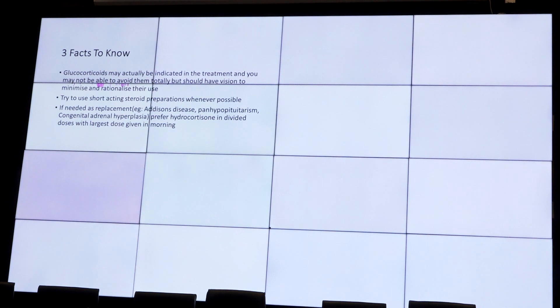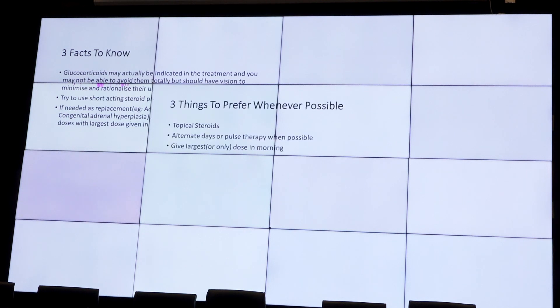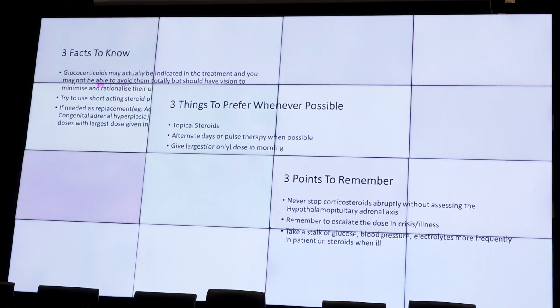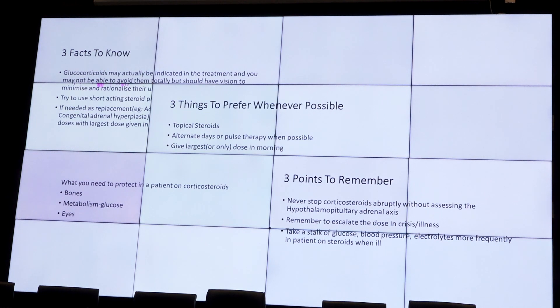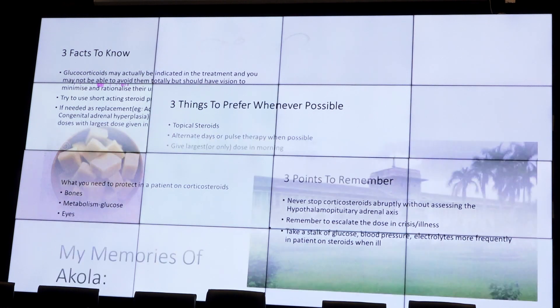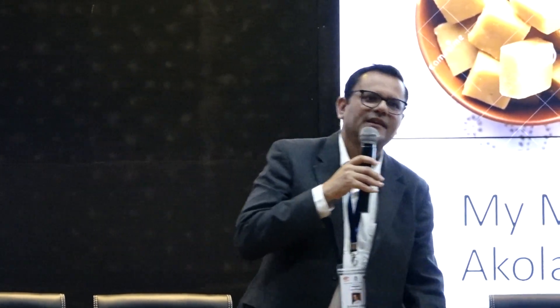Quick recap: glucocorticoids may be needed to treat disease, but if you want to give the patient pleasure, always be prepared to take care of the pain. Use the shortest dose whenever possible. For replacement, use hydrocortisone. For therapeutic use, prefer topical steroids, alternate-day therapy, or if giving daily, give in the morning. Never stop glucocorticoids abruptly. Always remember crisis management, and always check glucose, blood pressure, and electrolytes. If steroids need to be continued, check bones, metabolism, and glucose. Thank you all for your patient listening.